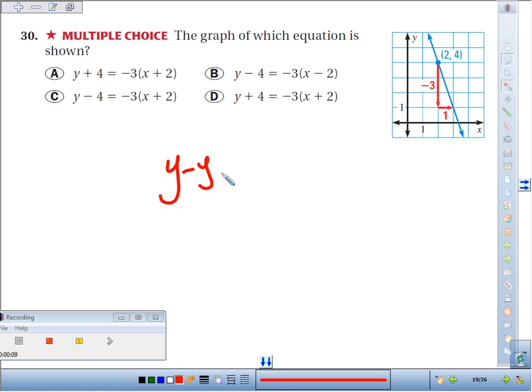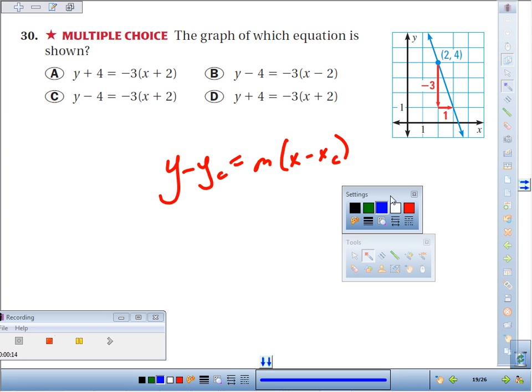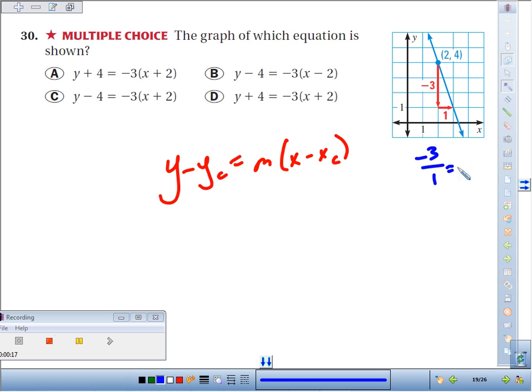y minus your y-coordinate equals slope times x minus your x-coordinate. The slope is negative 3 over 1, which is negative 3.